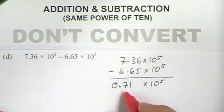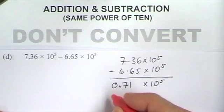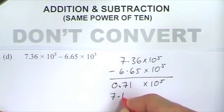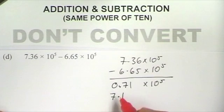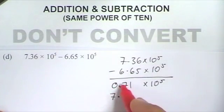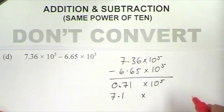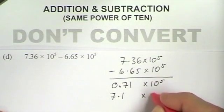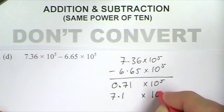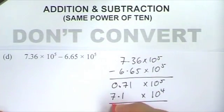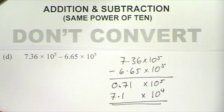So I've got to convert this into standard form by making it 7.1 — now I've got a number between 1 and 10. But I've made this first part of the number 10 times bigger, a power of 10 bigger. So this second part of the number I must make a power of 10 smaller, so it goes to 10 to the 4. And that's my answer: 7.1 times 10 to the 4.